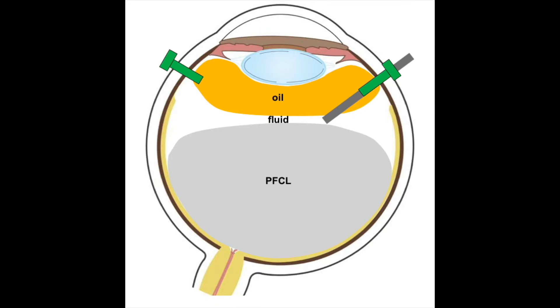The diagram shows the vitreous cavity flows at the beginning of the exchange. It is important to first aspirate the BSS layer on top of the PFCL before moving to aspirate the peripheral carbon liquid, as shown in the diagram.